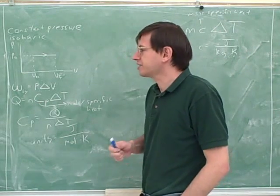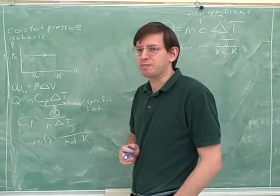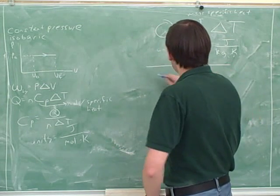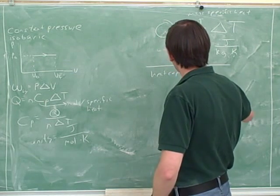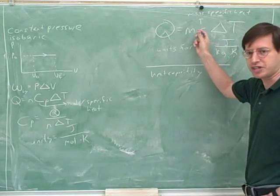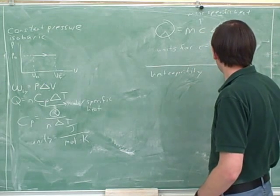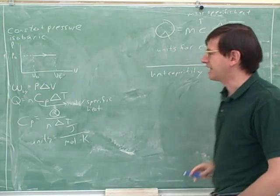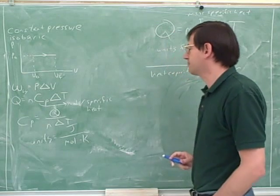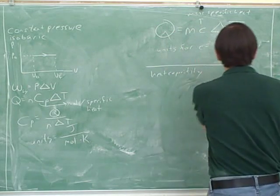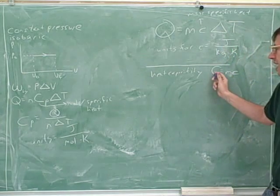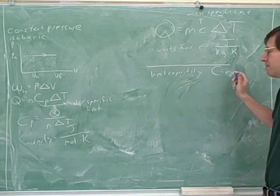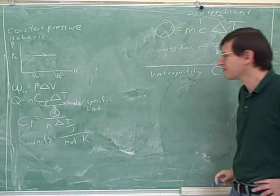Now, to add to the confusion, last time we also talked about something called the heat capacity, which I told you is just these two terms together, m times c. And to add to the confusion, I said that oftentimes the symbol for that is a capital C. You can use capital C for the heat capacity, and that would be m times little c for the specific heat.